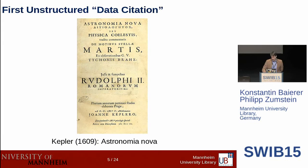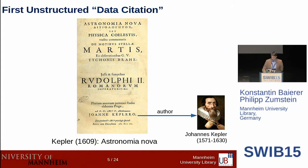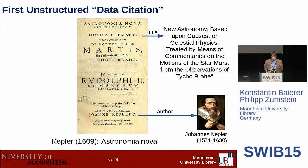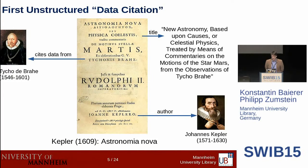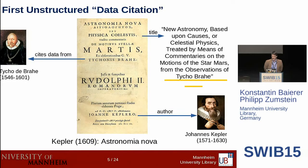Here is one of the first unstructured data citations. It's a book by Kepler — he's the author. The title, translated into English, says: 'New Astronomy Based Upon Causes for Celestial Physics Treated by Means of Commentaries on the Motions of the Star Mars from the Observations of Tycho Brahe.' So he mentions the research data from Tycho Brahe — he cites it as a kind of data citation, just by including 'from the observation of Tycho Brahe' as part of the title. That was a long time ago.